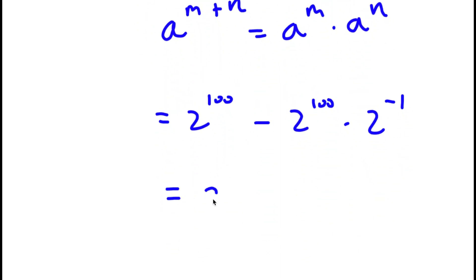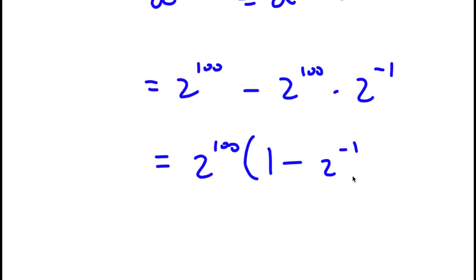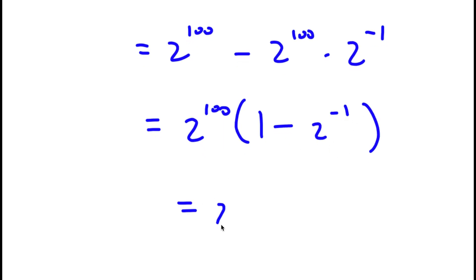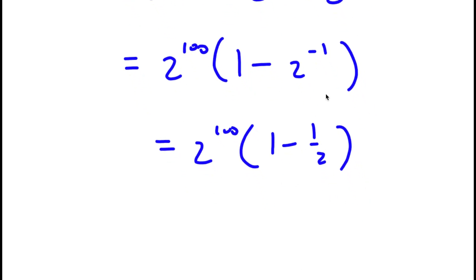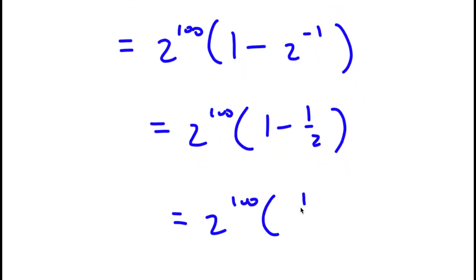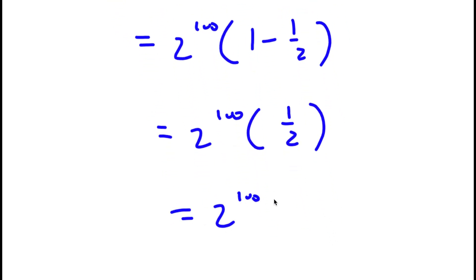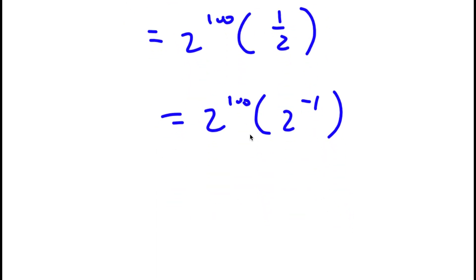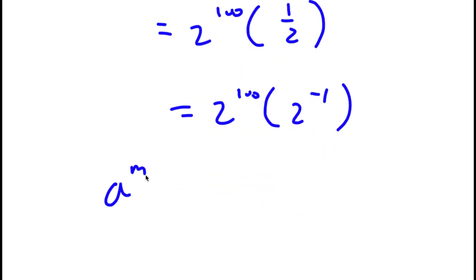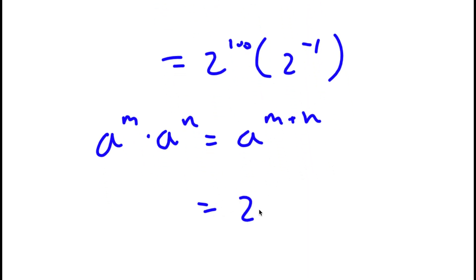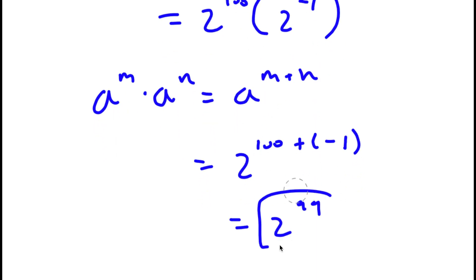If I factor out 2 to the power of 100, I get 2 to the power of 100 times (1 minus 2 to the power of negative 1). Now, 2 to the power of negative 1 equals one half. So I have 2 to the power of 100 times (1 minus one half), and 1 minus one half is simply one half. So I have 2 to the power of 100 times one half, and one half is simply 2 to the power of negative 1. So I have 2 to the power of 100 times 2 to the power of negative 1, which equals 2 to the power of 100 plus negative 1, which is equal to 2 to the power of 99. So this is my answer.